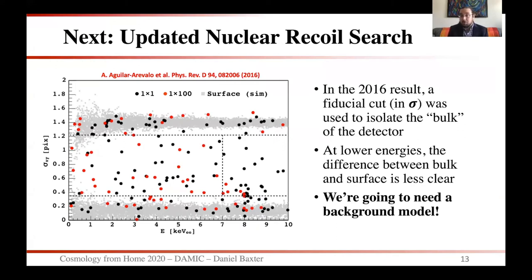An important note: in the 2016 result, we used a fiducial cut to isolate the bulk of the detector. However, with this new data we want to push the threshold lower. As you can see in the previous data, going to lower energies below a keV gives significant leakage of surface events into the bulk. This means we're going to need a background model this time around in order to lower our threshold.